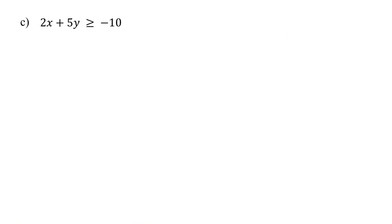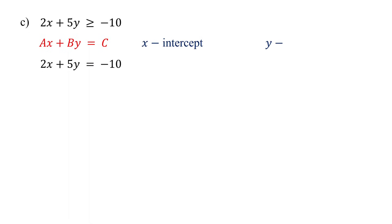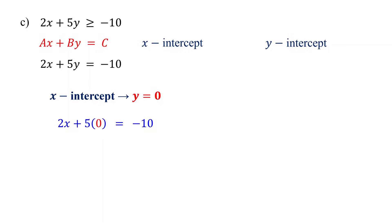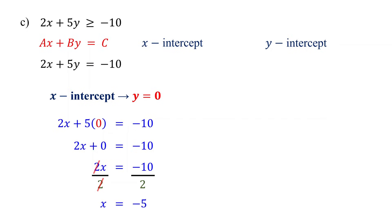Now let's move on to an example where the inequality is in standard form. As always, first graph the boundary line by replacing the inequality sign with an equal sign. This equation is in standard form. The easiest way to graph an equation in this form is to use the x and y-intercepts. The x-intercept occurs when y equals 0, so set y to 0 and solve for x. 5 times 0 is 0, leaving us with 2x equals negative 10. Divide both sides by 2 to get x equals negative 5. Therefore, the x-intercept is negative 5 comma 0, which is where the line crosses the x-axis.